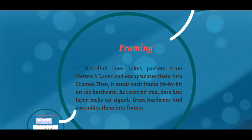The Data Link layer takes packages from the network layer and encapsulates them into frames. Then it sends each frame bit by bit on the hardware. At the receiver end, the Data Link layer picks up signals from hardware and assembles them into frames. In short, framing is a process of breaking a stream of bits and packing them into frames.